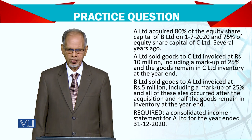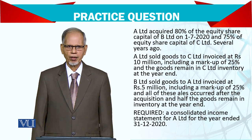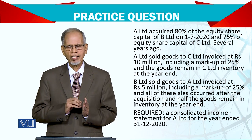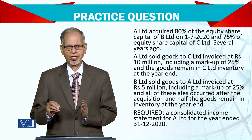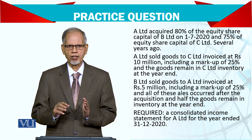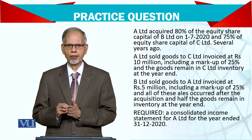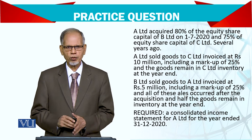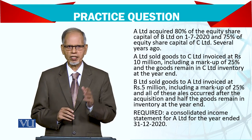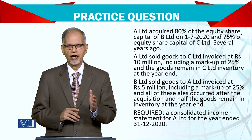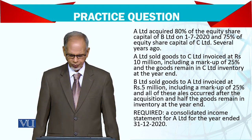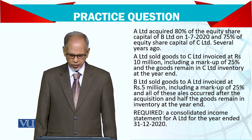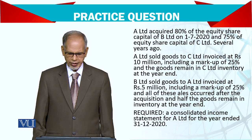The inventory includes a markup of 20%. I have explained this many times — cost plus markup: if cost is 100 and markup is 25%, the sale price is 125. So if you look at profit margin on sales, it comes to 20%. Goods remaining in inventory at year-end are still within the group.